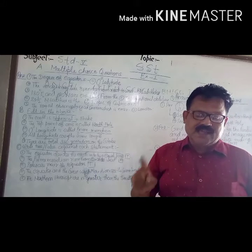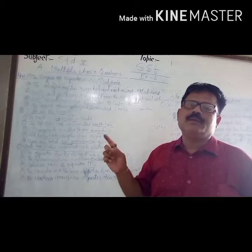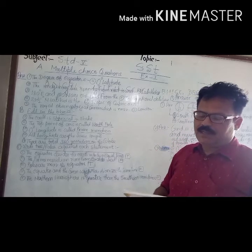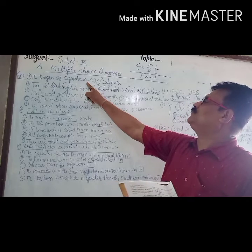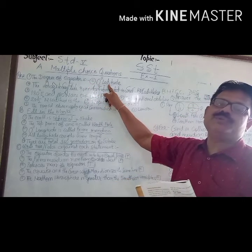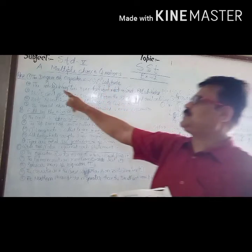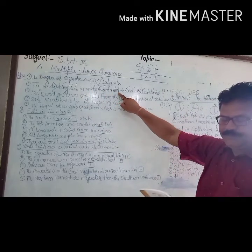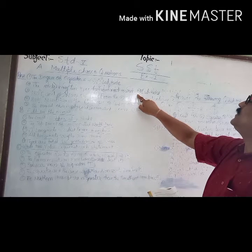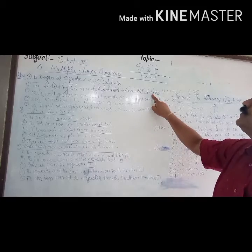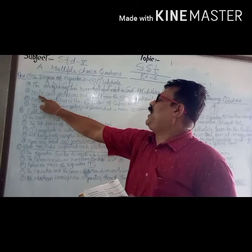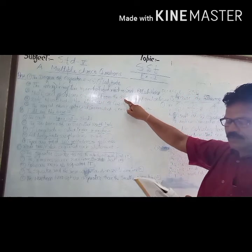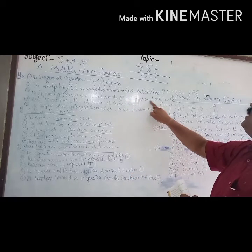There are 4 options for each question. Pick the correct option, but I have written only the answer. First: the degree of the equator is — answer: 0 degree latitude. Next, Question 2: the imaginary line running from east to west — its answer is latitude. Third: 180 degree east and 180 degree west are one and the same — answer: International Date Line.